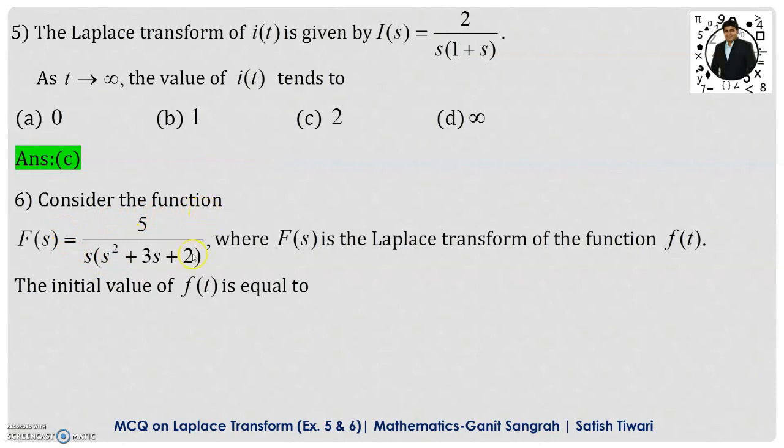Question number 6: Consider the function F(s) equals 5 upon s into s square plus 3s plus 2, where F(s) is the Laplace transform of the function f(t). The initial value of f(t) is equal to.